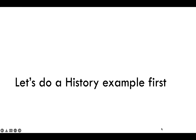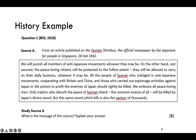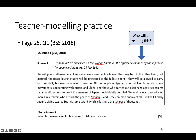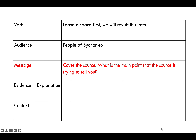Let's try inference of message on a history example. We have a source from an article published in the Syonan Shimbun, the official newspaper by the Japanese for people in Singapore during the Japanese occupation. The question is: what is the message of this source? If you struggle to think of the strong verb, leave a space and revisit it later. Jump to audience first — look at the provenance: the Syonan Shimbun, published for people in Singapore on 28 February 1942. Who will be reading this? The people of Syonan-to.